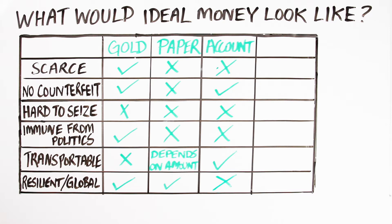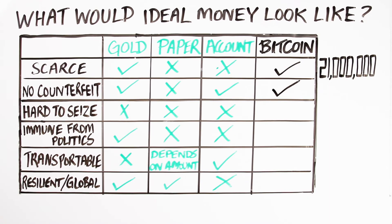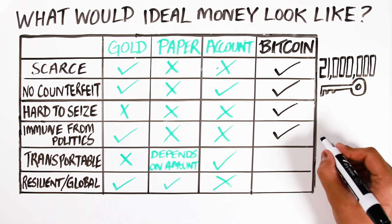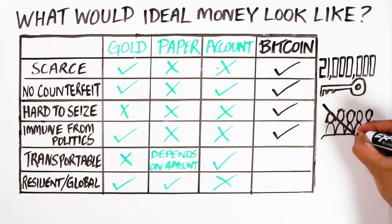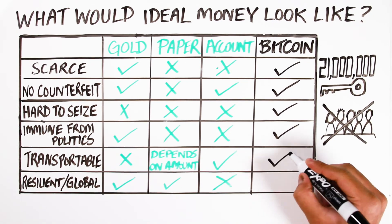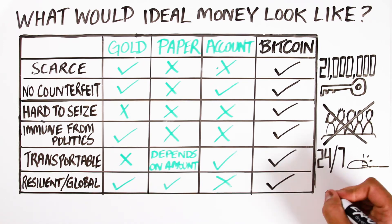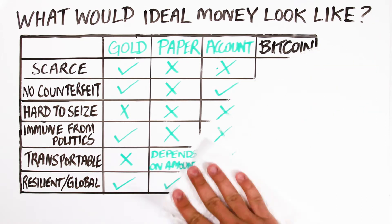But there is one form of money that is ideal that checks all of these boxes. It was created 10 years ago, and that is Bitcoin. It is scarce. There will only ever be 21 million units. It is counterfeit proof and difficult to seize. It depends upon public private key encryption and a global ledger to prevent double spending. It is immune from politics. It depends instead on a computer algorithm and not on a committee of elite central bankers huddled up in some room in Washington, D.C. It is transportable worldwide 24 hours a day, seven days a week with the click of a button. And it is resilient and global. It is dependent upon a network of 11,000 nodes. So if one of them goes down, the network will still be up, it will still survive. The network has been up and running for 99% of the time over the last 10 years.